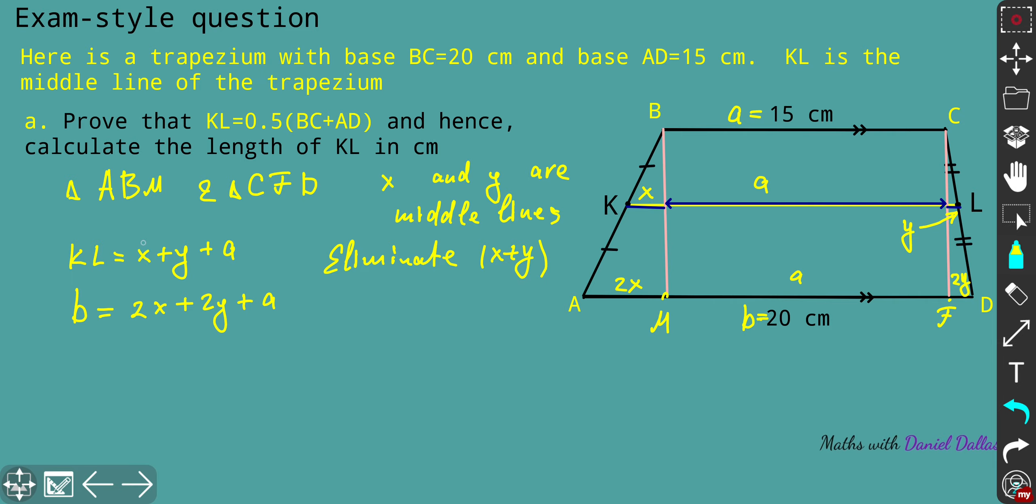What we can do is eliminate x plus y because they're redundant variables. I'm not going to eliminate x and y separately, I'll just eliminate the whole x plus y. I'll multiply by 2 the left side and right side of the equation for KL. I'll get 2KL equals 2(x+y) plus 2a. In the bottom equation, I'll also factorize 2, so 2 times (x+y) plus a.